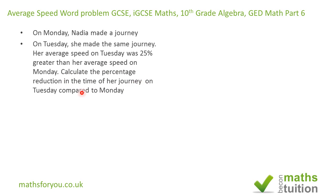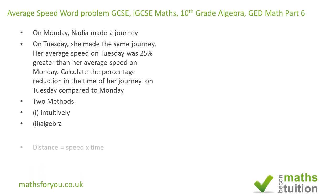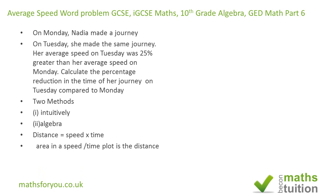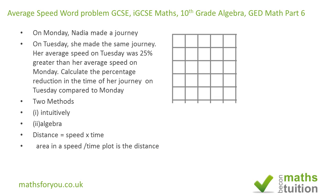There'll be two methods: one is doing it intuitively and the other is doing it by algebra. I'm going to use the fact that distance equals speed times time, similar to how area equals length times width. In a speed-time plot, the area underneath the graph equals the distance travelled, and that's what I'll use here.